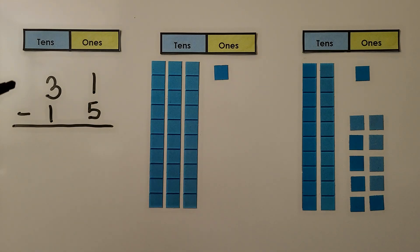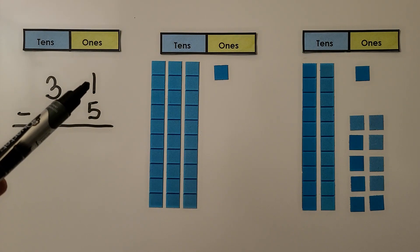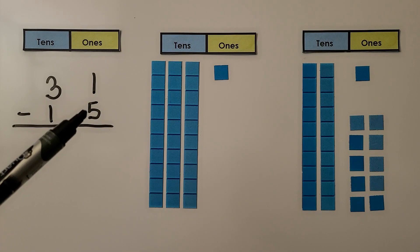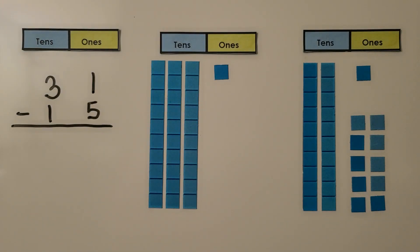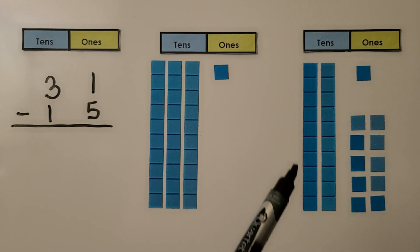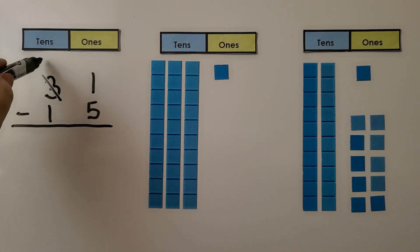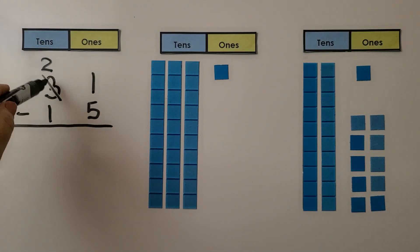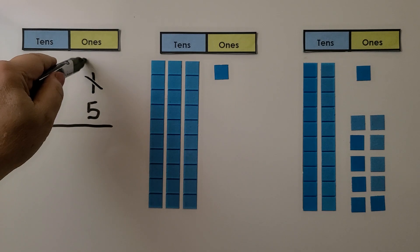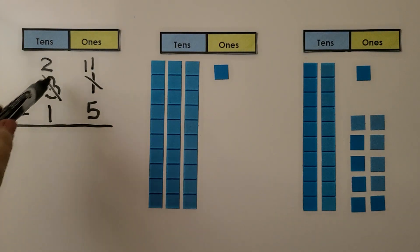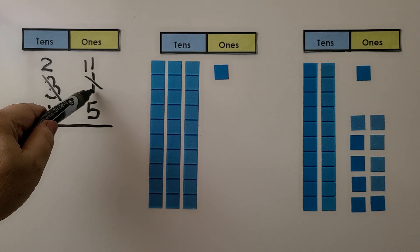Here we have 31 minus 15. When we look at the ones place, we don't have enough ones to take five away. We have three tens, one one. What we need to do is take one of these tens and turn it into ten ones. Now we have two tens, eleven ones. We cross off the three in the tens place and make it a two because we're taking one of them away. We give the one ten to the ones place as ten ones. Now instead of one one, we have eleven ones — the ten ones plus the one that was here makes eleven ones.